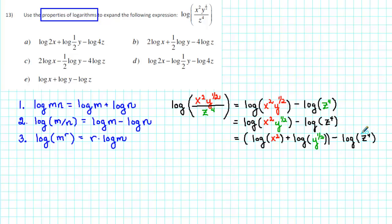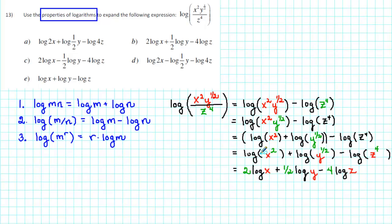Now notice that each of the arguments is a power, so finally in our last step we'll apply rule number three. We get two times the log of x, plus one-half times the log of y, minus four times the log of z.